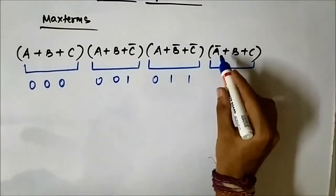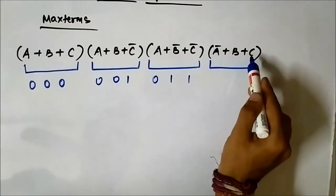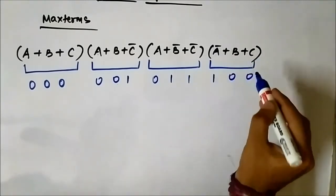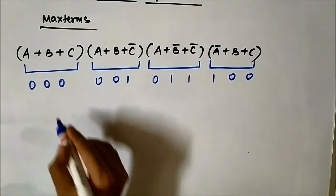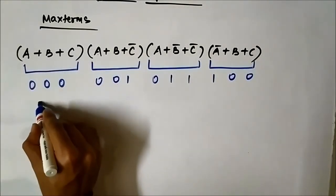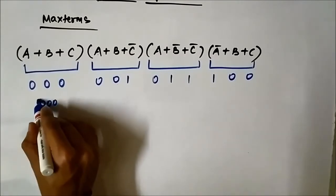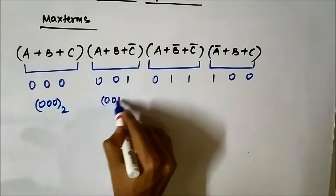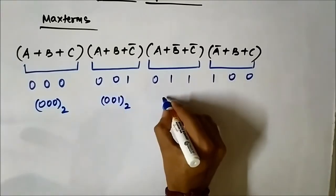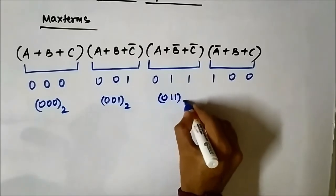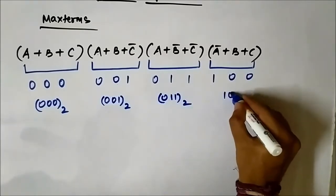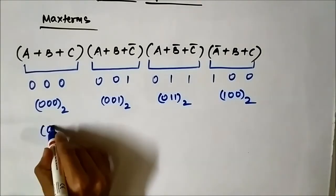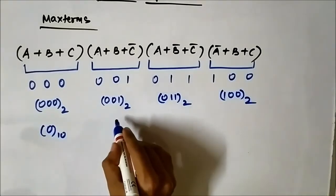Similarly, here a is uncomplemented and b and c are complemented, so it is 0, 1, 1. Here, a is complemented and b and c are uncomplemented, so it is 1, 0, 0. In binary representation it is 0, 0, 0; then 0, 0, 1; then 0, 1, 1; and then 1, 0, 0. In decimal it is 0, 1, 3, and 4.